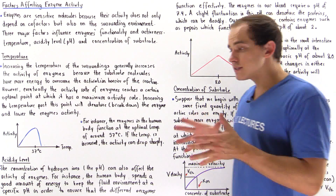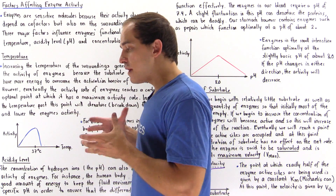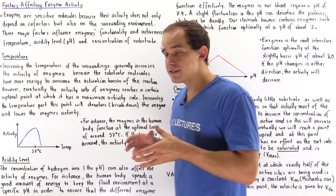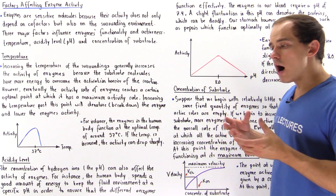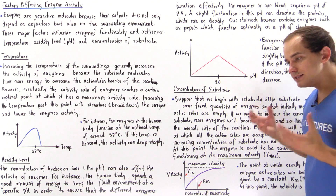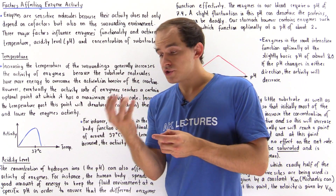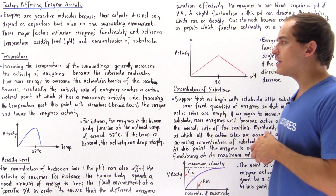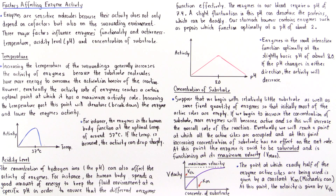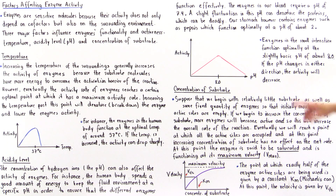If we examine the small intestine, which contains the enzymes involved in breaking down macromolecules into their constituent parts that are then ingested into our blood, the enzymes in the small intestine function optimally at a slightly basic pH of about 8.0.